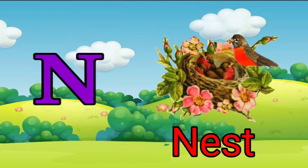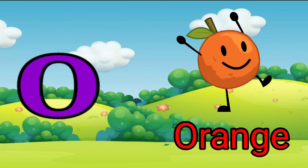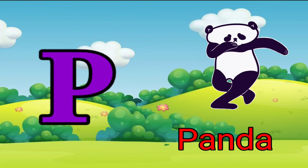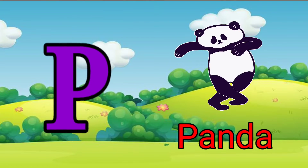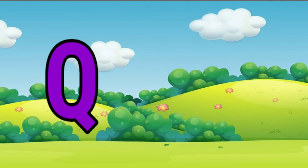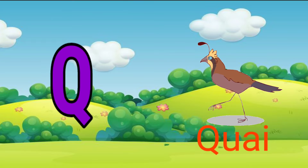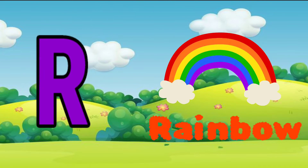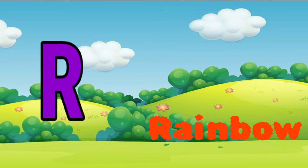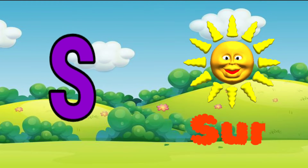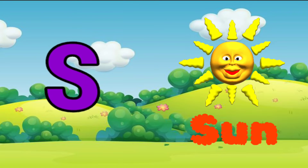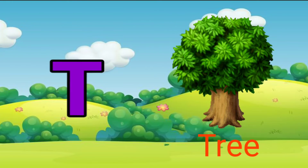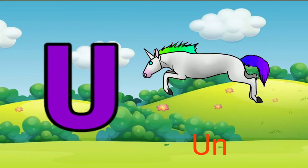O for Orange. P for Panda. Q for Quail. R for Rainbow. S for Sun. T for Tree. U for Unicorn.